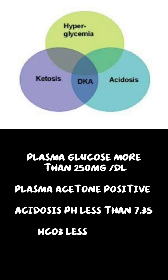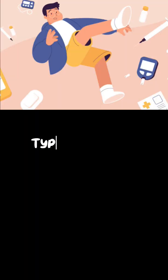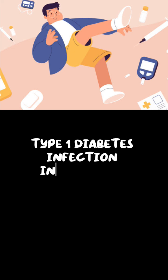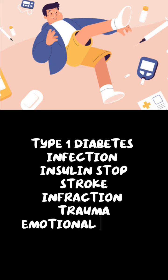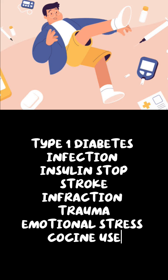The presence of ketone bodies confirms the diagnosis. DKA causes are common in Type 1 diabetes. Precipitating conditions include infection, insulin omission, sudden insulin stoppage, stroke, infarction, trauma, emotional stress, and drug use such as cocaine.